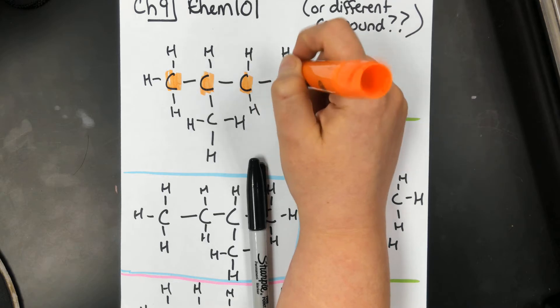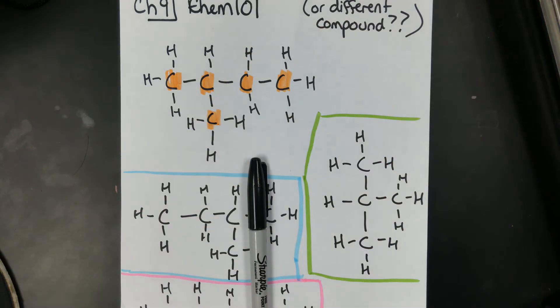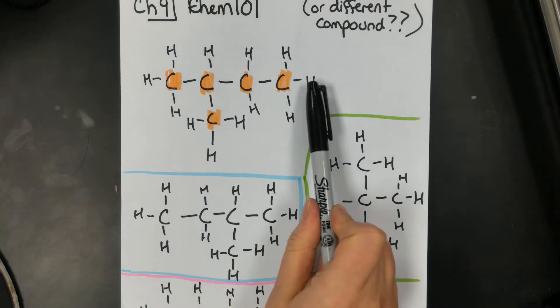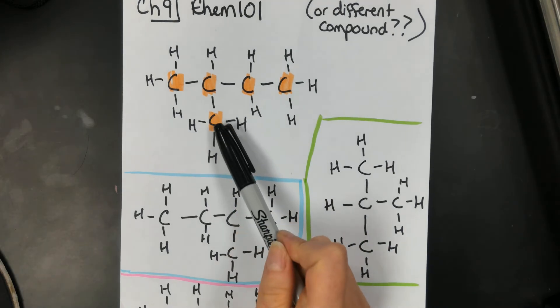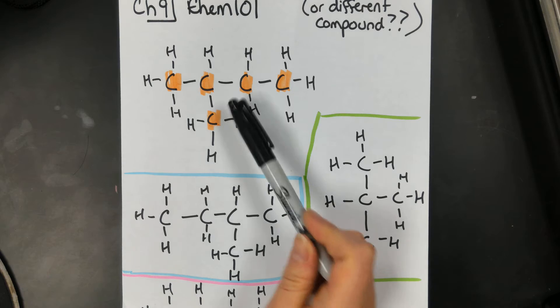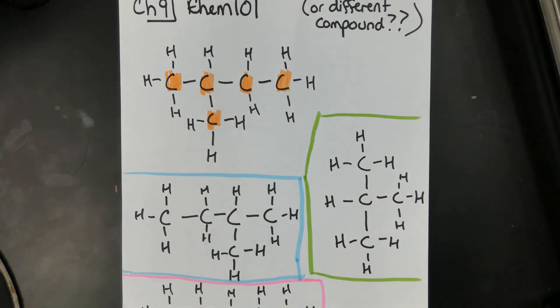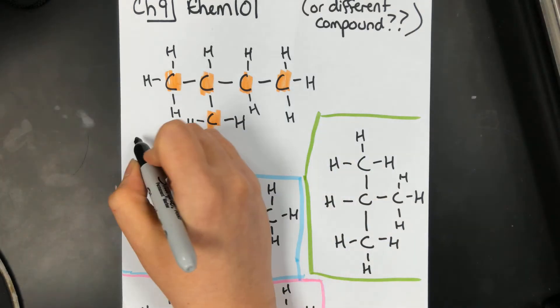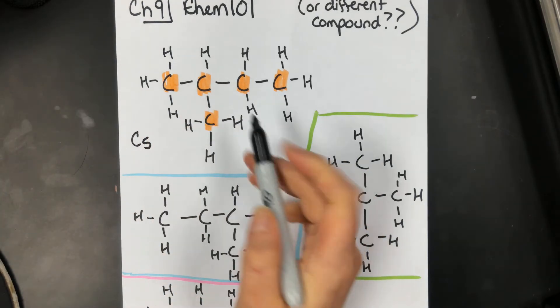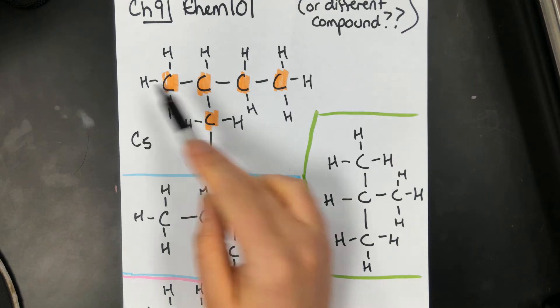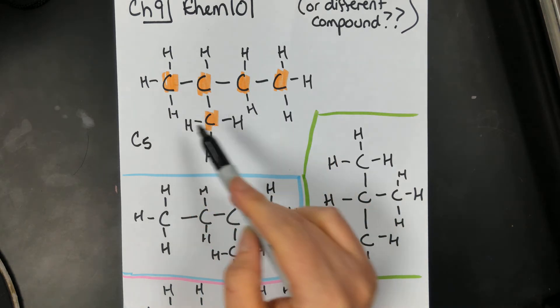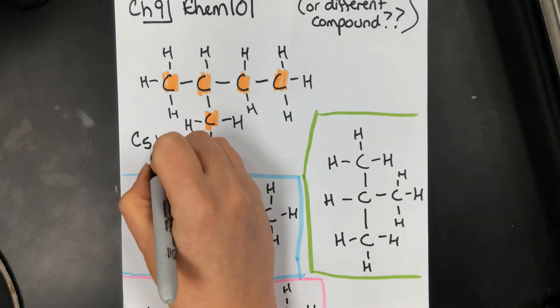Here we have a carbon chain. So it looks like we have four carbons kind of in a row, and then one carbon offshooting, right? And we could even write down the formula. The formula for this would be C5, and then we could count the hydrogens. 1, 2, 3, 4, 5, 6, 7, 8, 9, 10, 11, 12, H12.